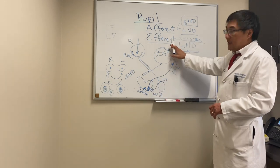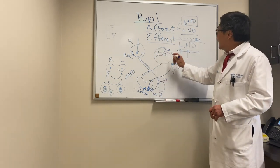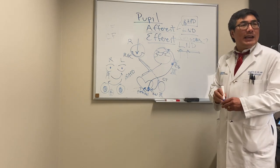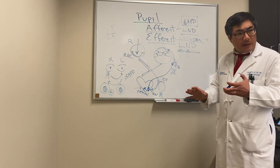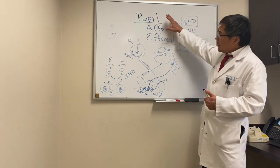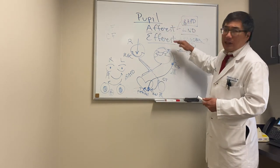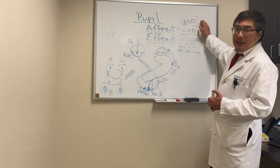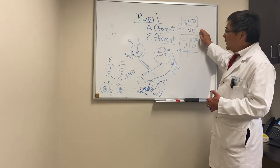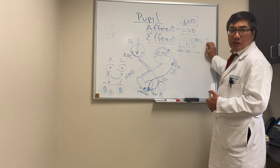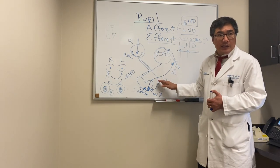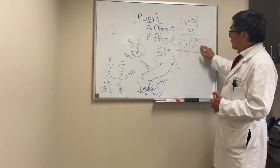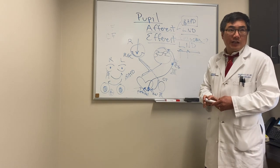Efferent disease usually causes anisocoria. If it's the parasympathetic pathway — from the Edinger-Westphal nucleus to the ganglion and the post-ganglionic nerve and iris — you'll see anisocoria. See the Horner syndrome video for anisocoria on the sympathetic side. In summary: the pupil pathway has an afferent and efferent component. The afferent pathway is tested by the RAPD and bilateral light-near dissociation. The efferent pathway produces anisocoria — either Horner's for sympathetics, or the third nerve, ganglion, and post-ganglionic nerve for parasympathetics — and we look for light-near dissociation.